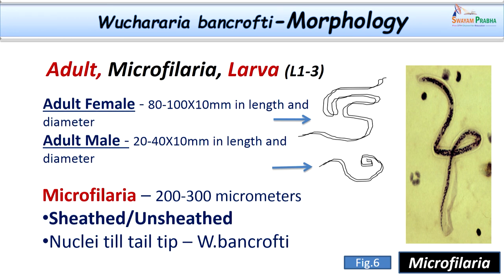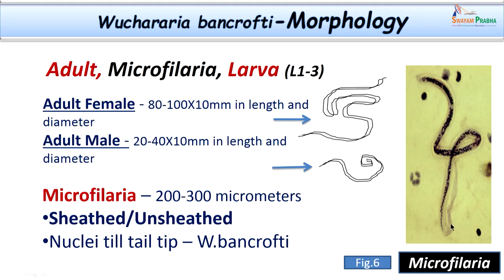It is important to differentiate the species of filarial parasites. There are two points to differentiate the species, especially between Wuchereria bancrofti and Brugia malayi. Wuchereria bancrofti microfilariae are sheathed, whereas in Brugia malayi we do not find the sheath around the parasite. Another differentiating point is the presence of nuclei: in Wuchereria bancrofti the tail tip is free of nuclei, stopping well before the tail end, whereas nuclei are present all the way to the tail end in Brugia malayi.